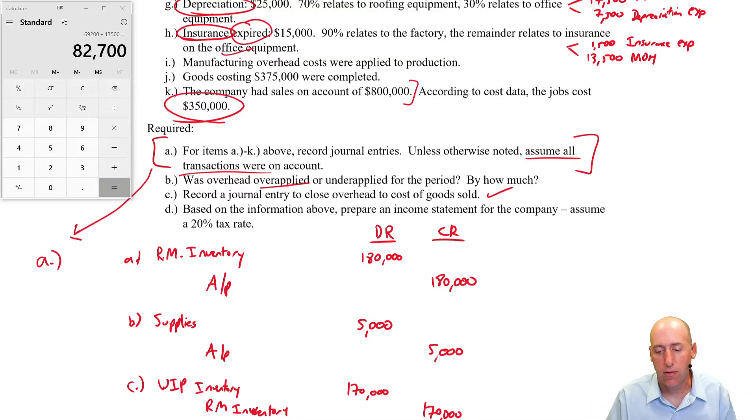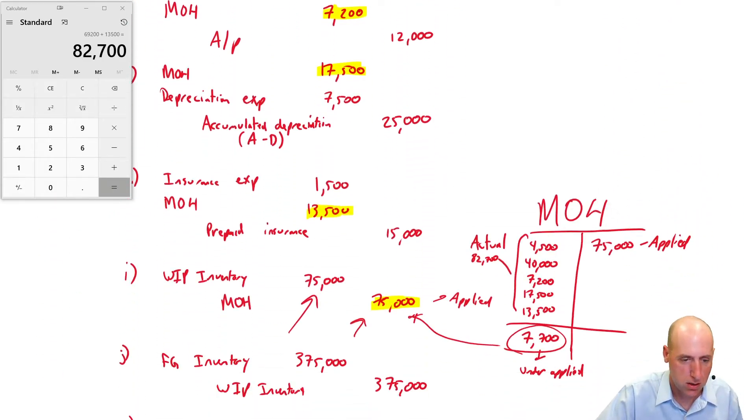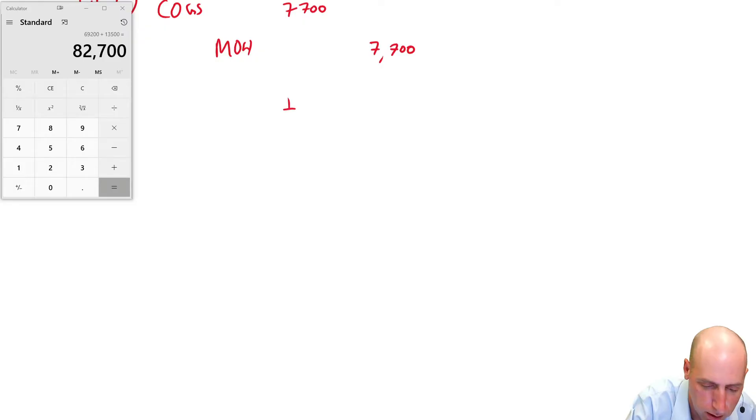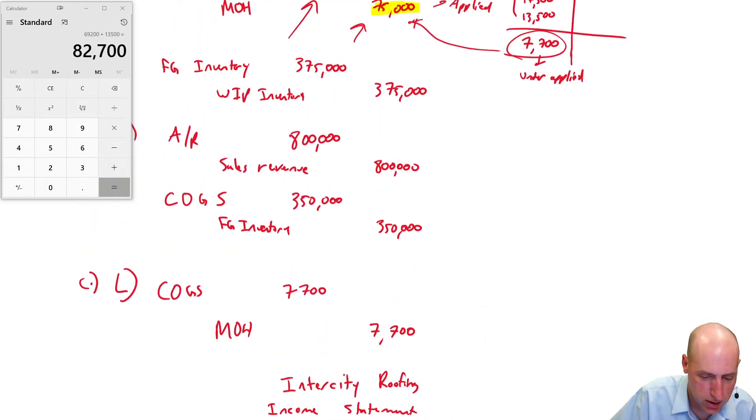Okay, so we have done part C. We had over-applied overhead in part B. We did a journal entry to close overhead to cost of goods sold in part C. Now D. Based on the information above, give me an income statement. Okay, an income statement is the summary of revenues and expenses. Let's give them an income statement. We need a three-line title. I forgot the name of our company. Inter-City Roofing. So let's start there. Income statement. Now they haven't given us any dates in this question, so I'm just going to say for the year ended December 31st.